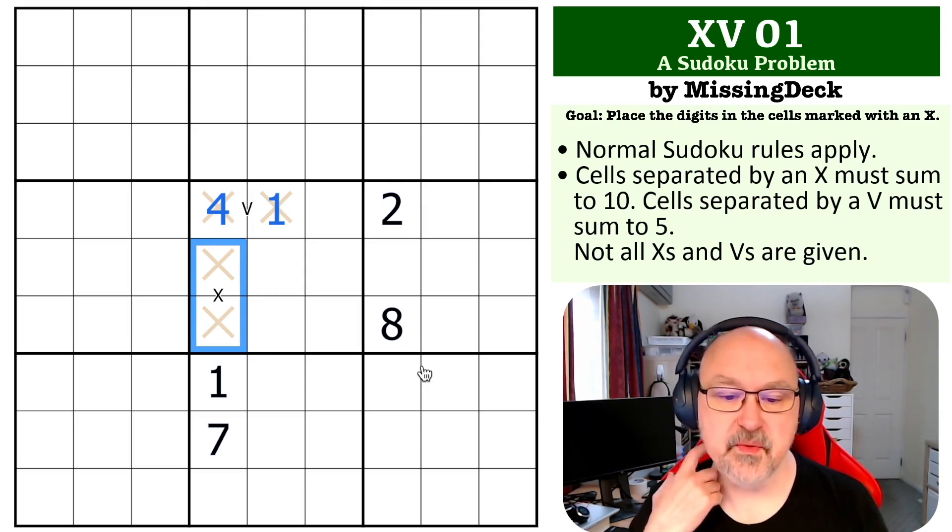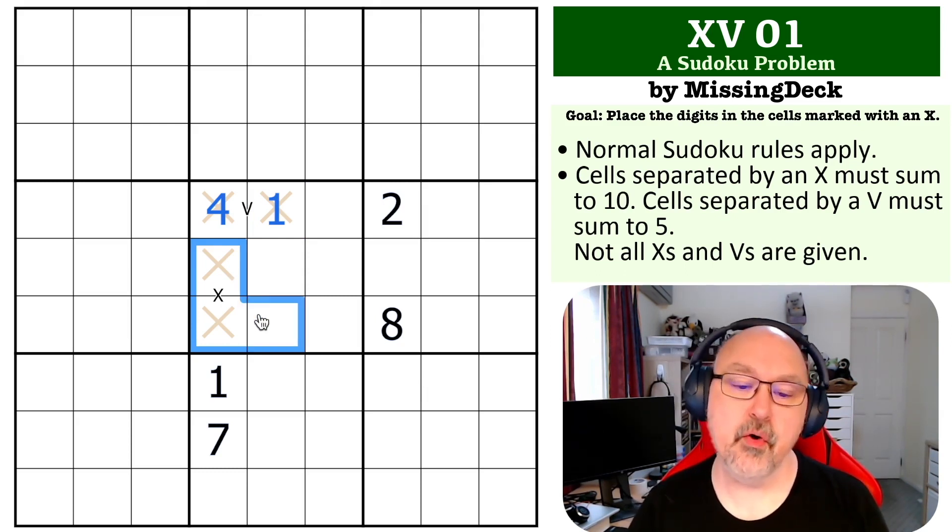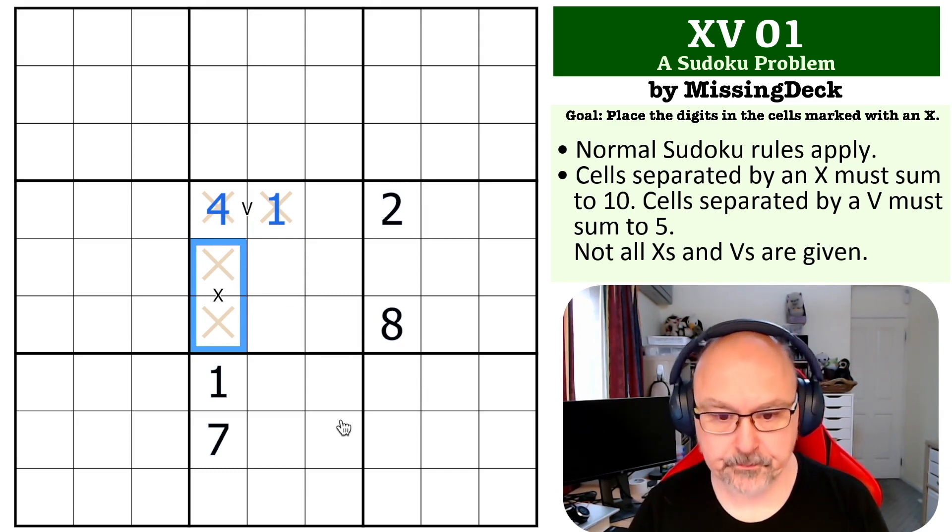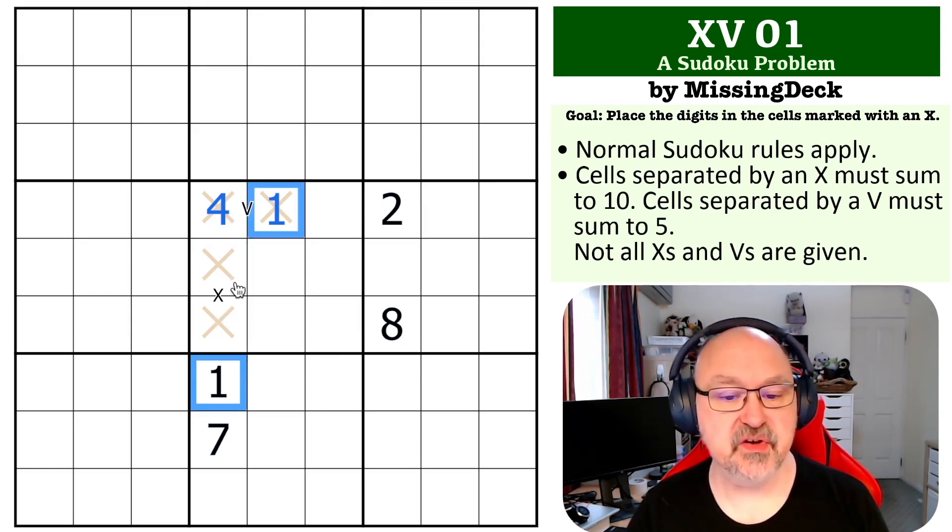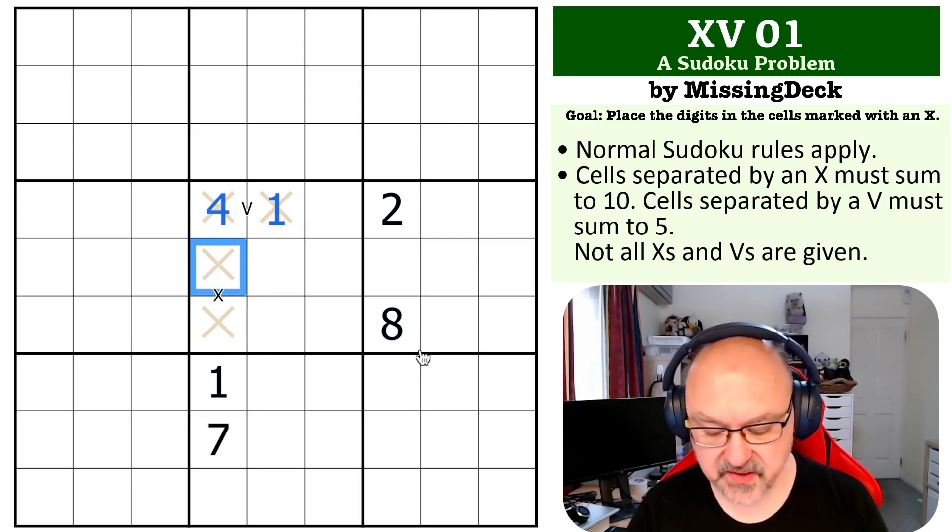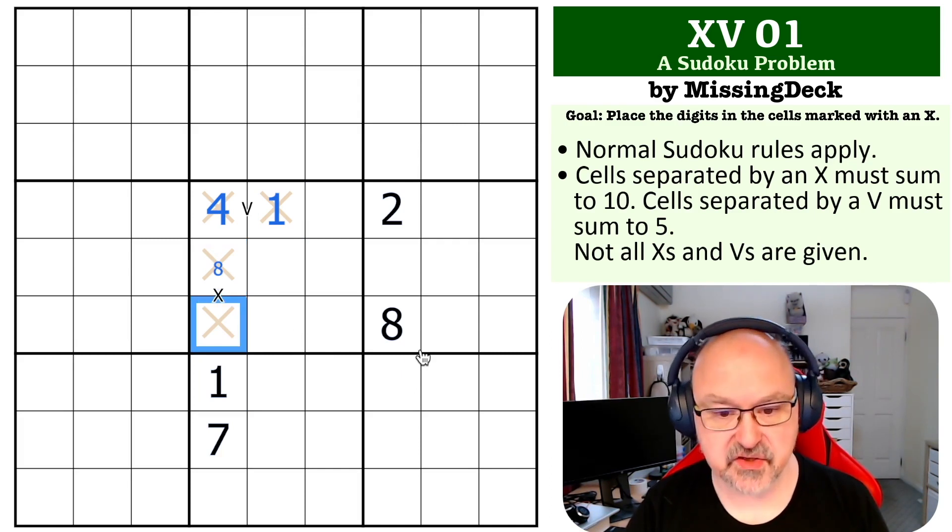This one's a little bit more tricky, but not too bad. There's only four ways of making up an X, which is you've got 1, 9, which we can't do because both cells see a 1. You've got 2, 8, which would be possible, but only in one order. You could do 8 and 2 because this cell is seen by an 8.